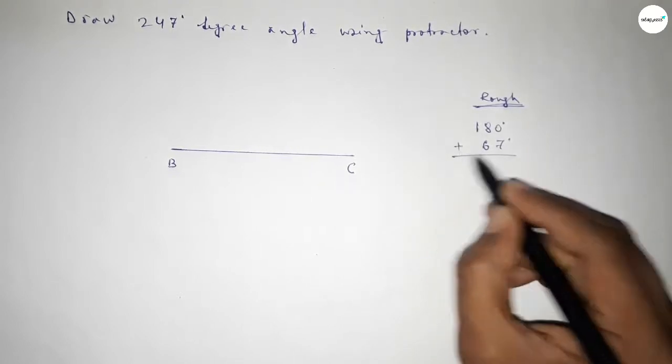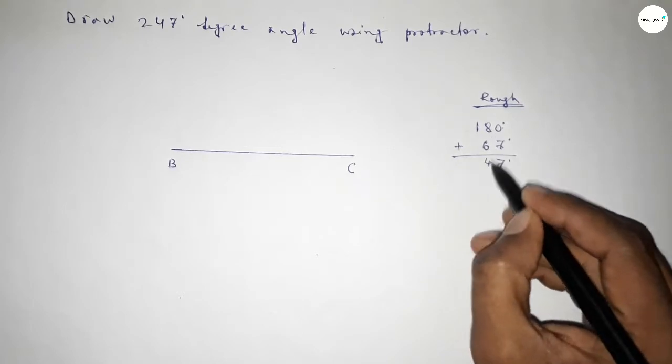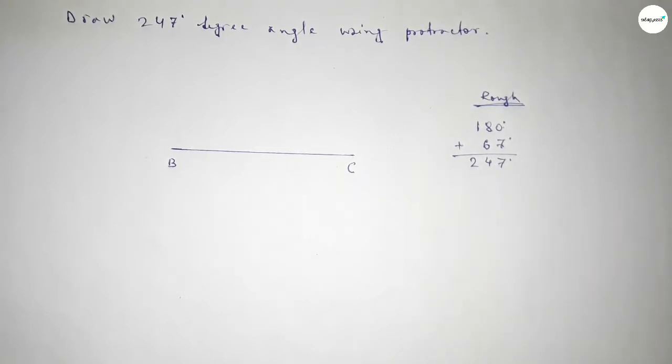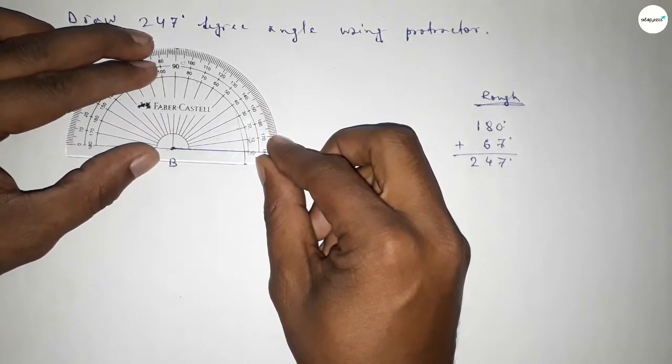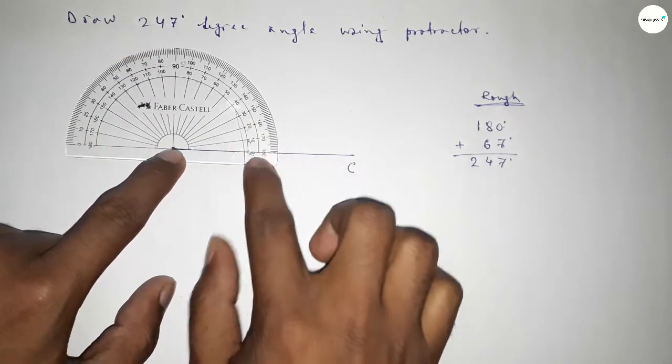So this is 7, 14 carry 1, so this is 2. So first we have to count 180 degree angle, so putting the protractor on the point B and counting 180 degree angle first.